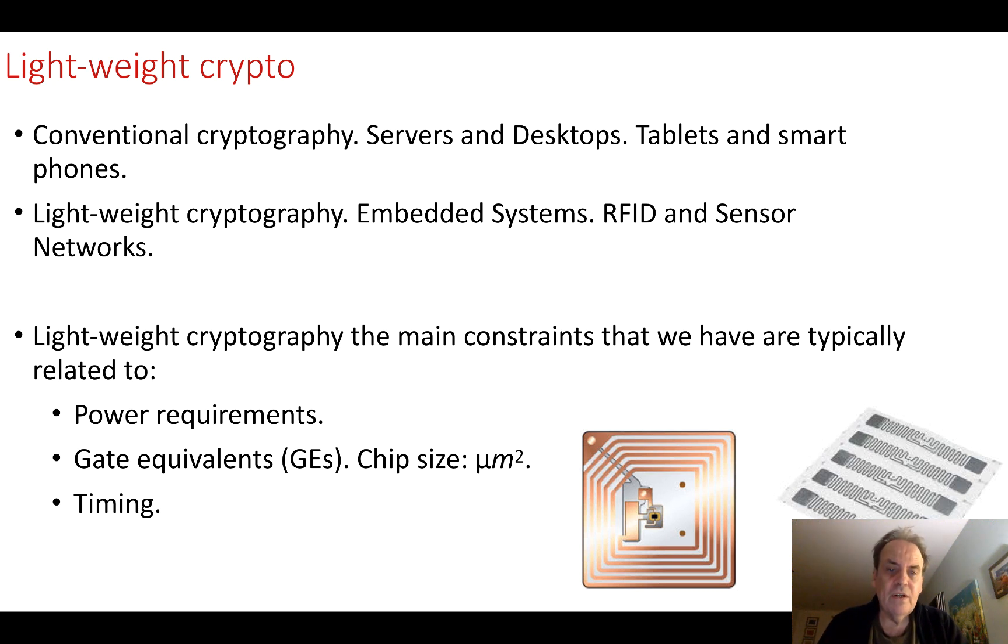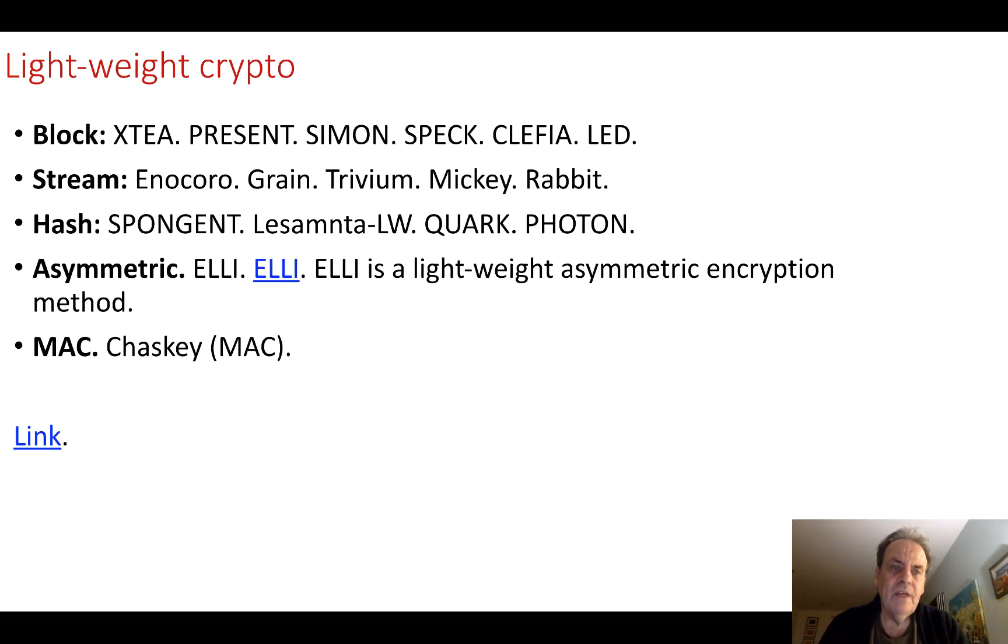Some of the lightweight cryptography that we have: we have our symmetric encryption methods, either block or stream. We take a secret key and it's shared by both sides, and they both use the encryption to create our cipher. We can have a block cipher where we take blocks of data at a time and cipher them.